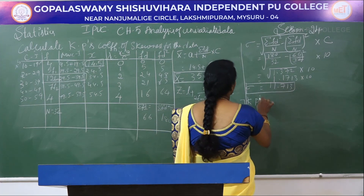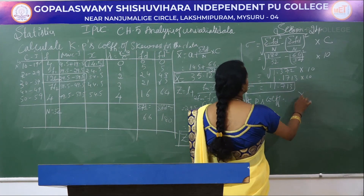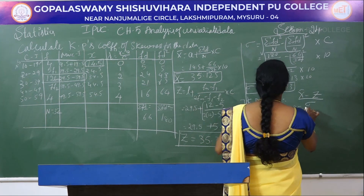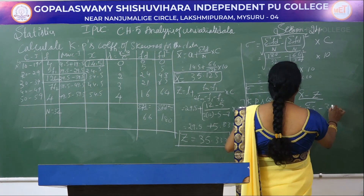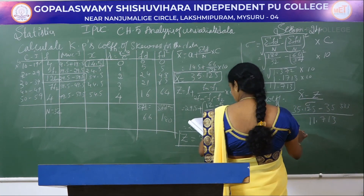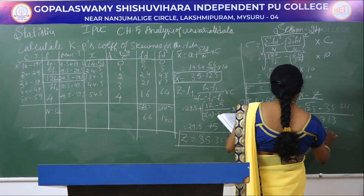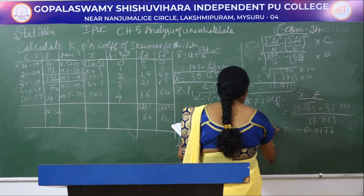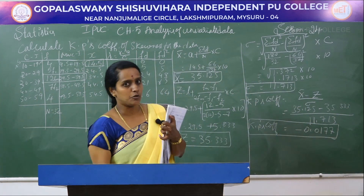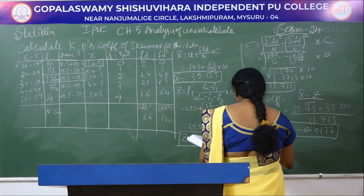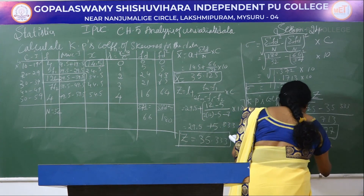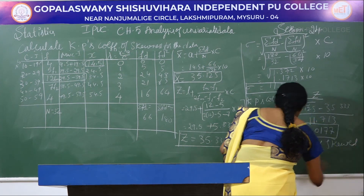Now apply KP's coefficient formula: (x̄ − z) / σ = (35.125 − 35.333) / 11.713 = −0.0177. KP's coefficient is negative; therefore, the given data follows a negatively skewed distribution.